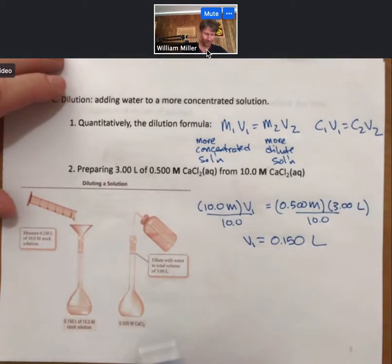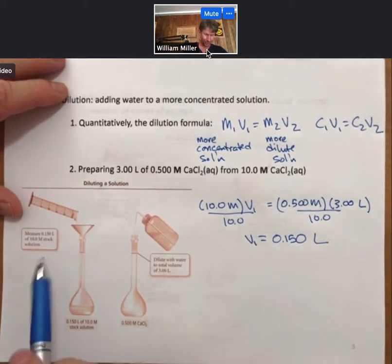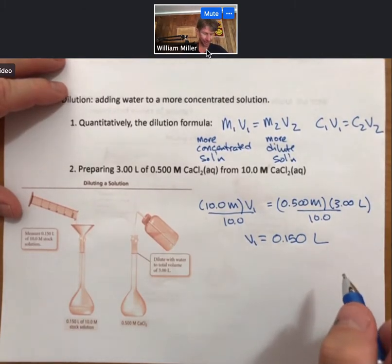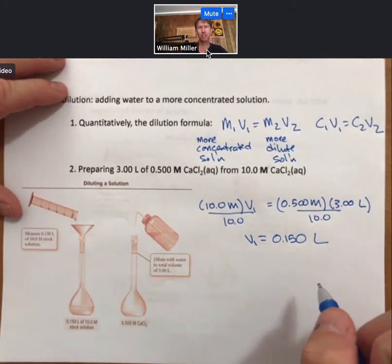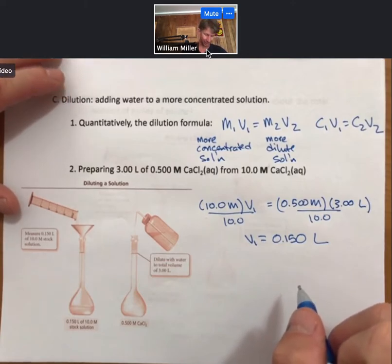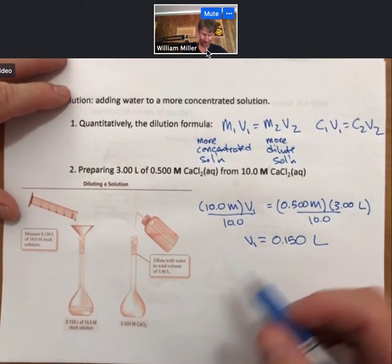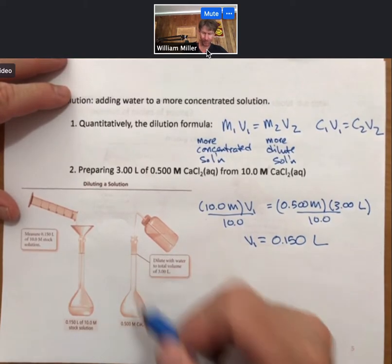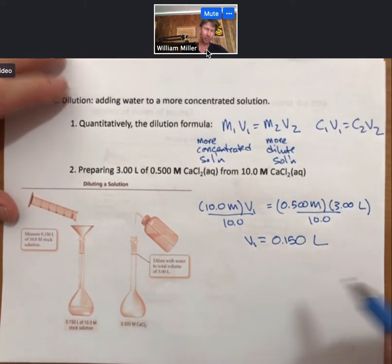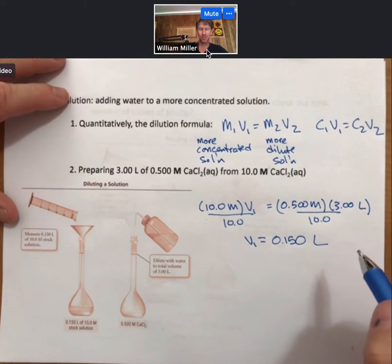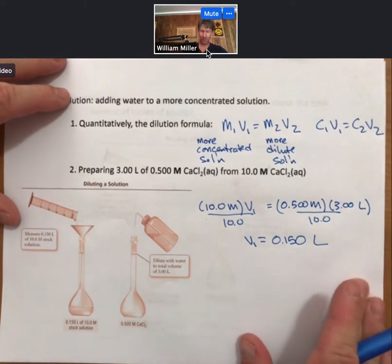And we've got a little picture of this process, how we might do it. You're going to take 0.150 liters of the 10.0 molar stock solution, more concentrated solution. Pour it into a three liter volumetric flask, add water, and then of course you're going to mix it as well. So that's a little bit about the process of dilution.